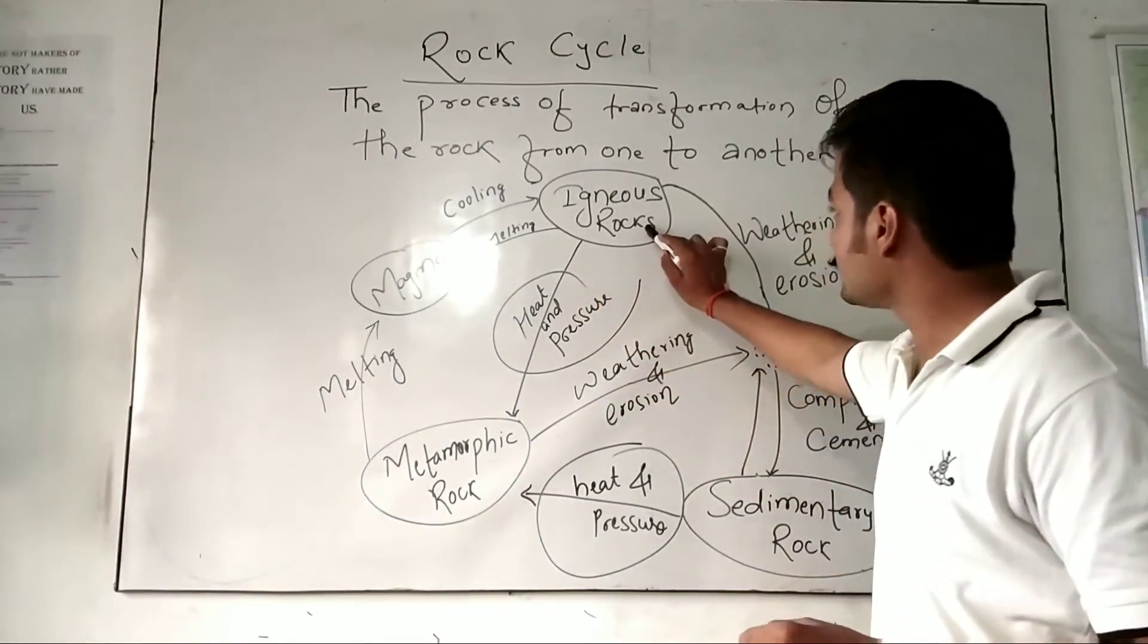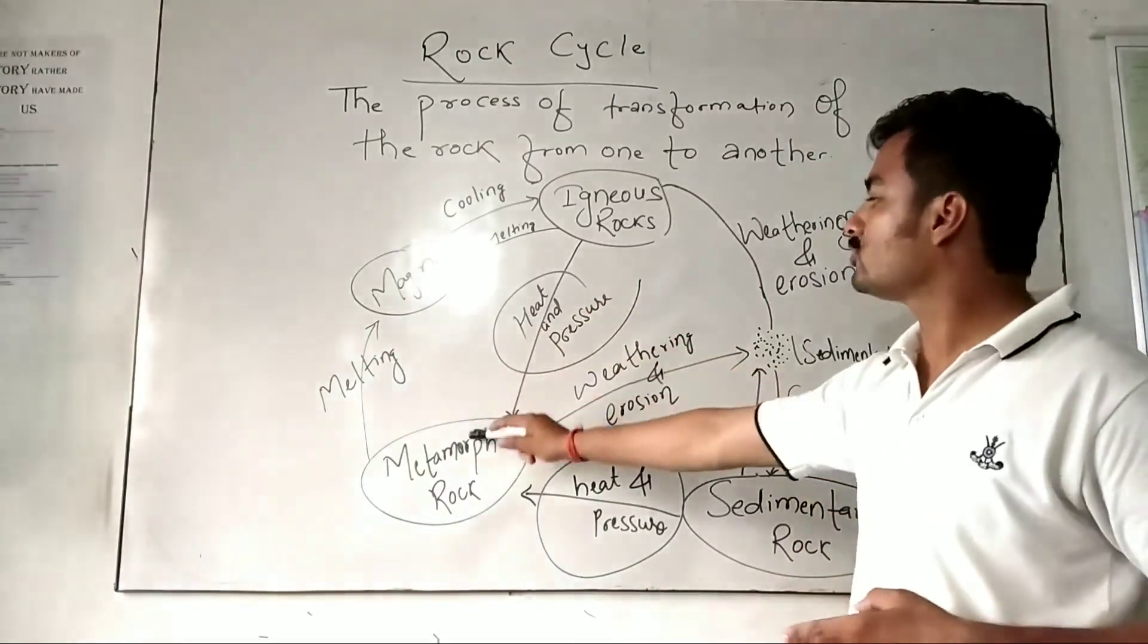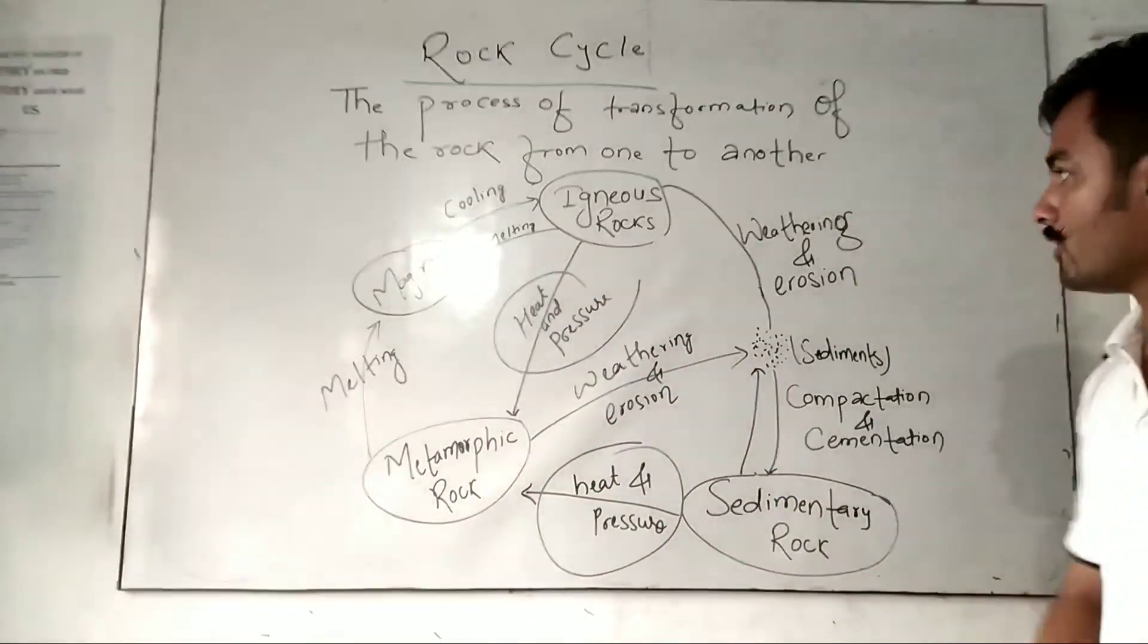When extreme heat and pressure falls upon either igneous rock or sedimentary rock, the rock so formed is known as metamorphic rock.